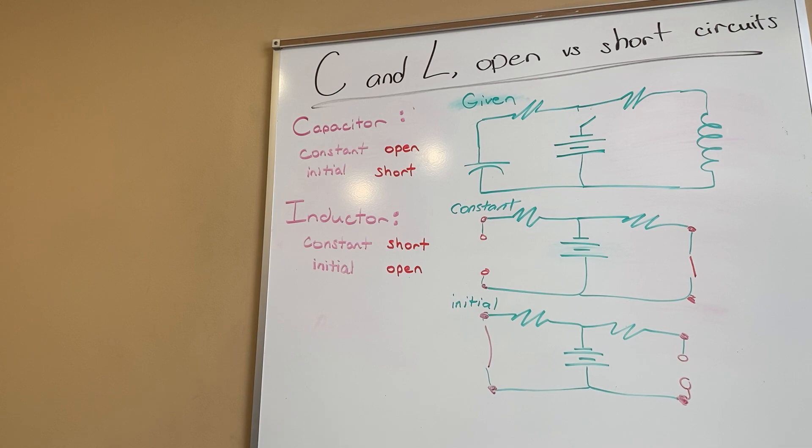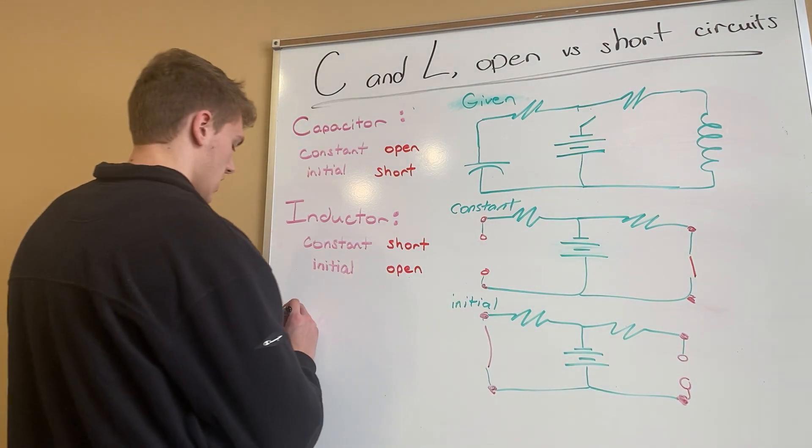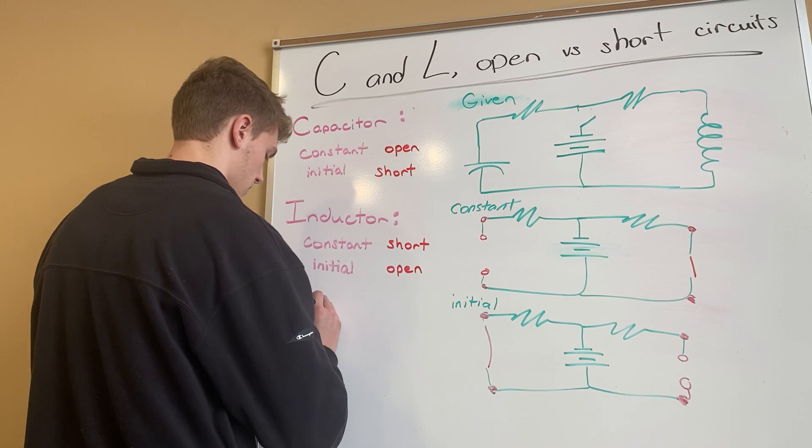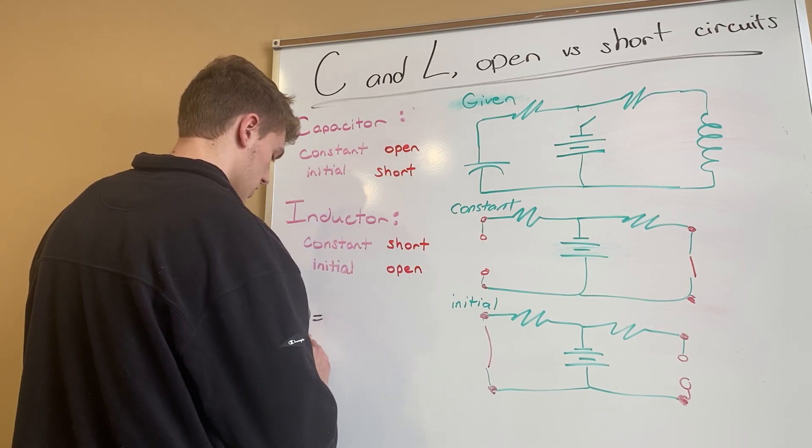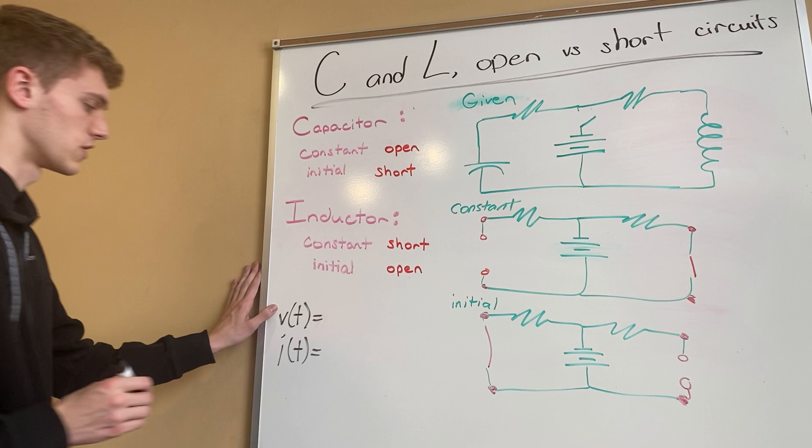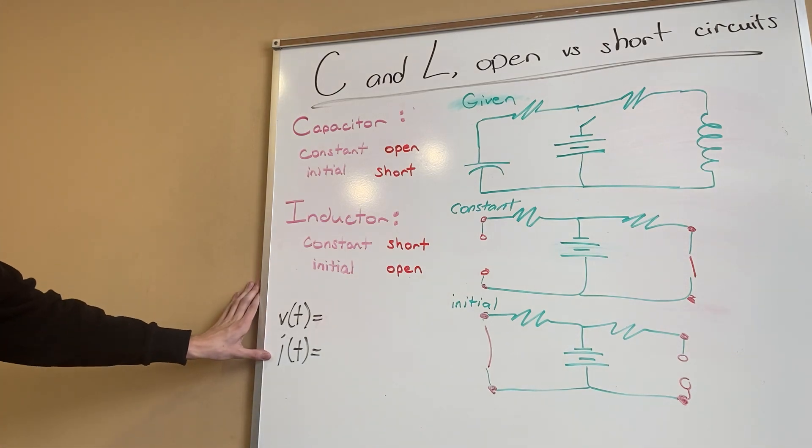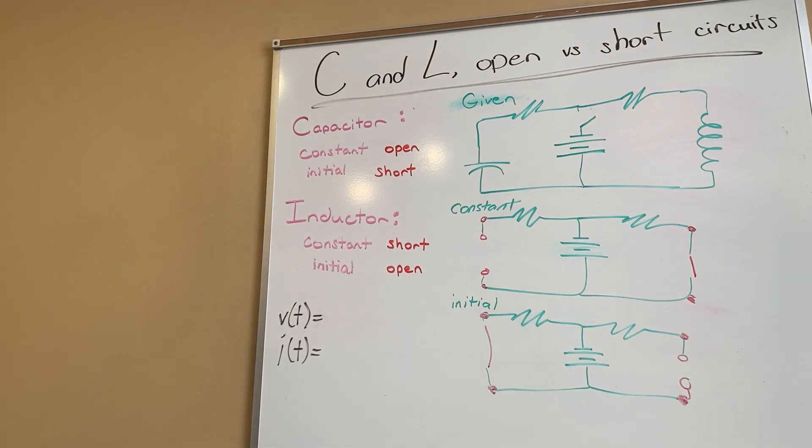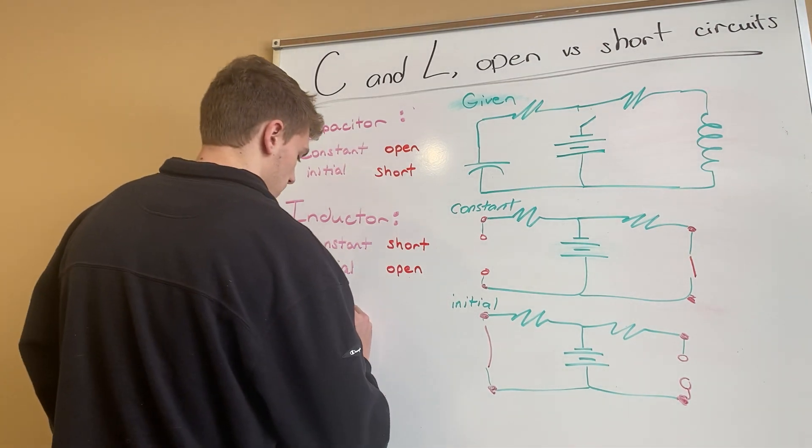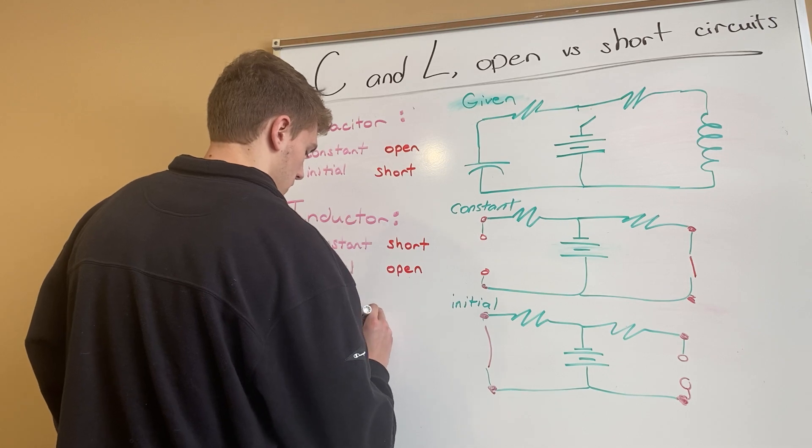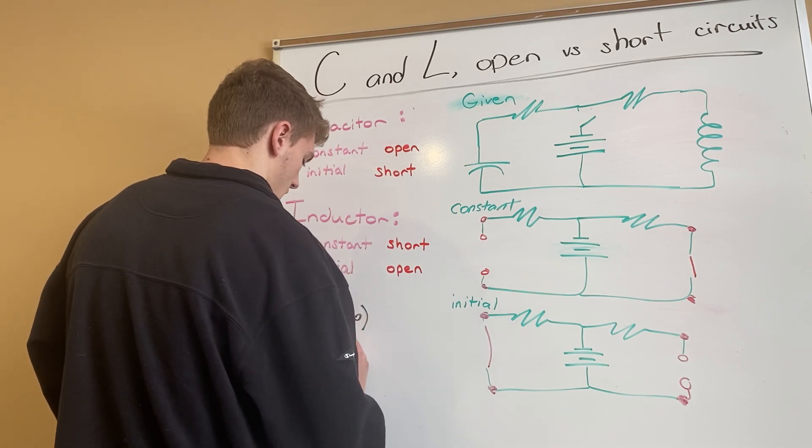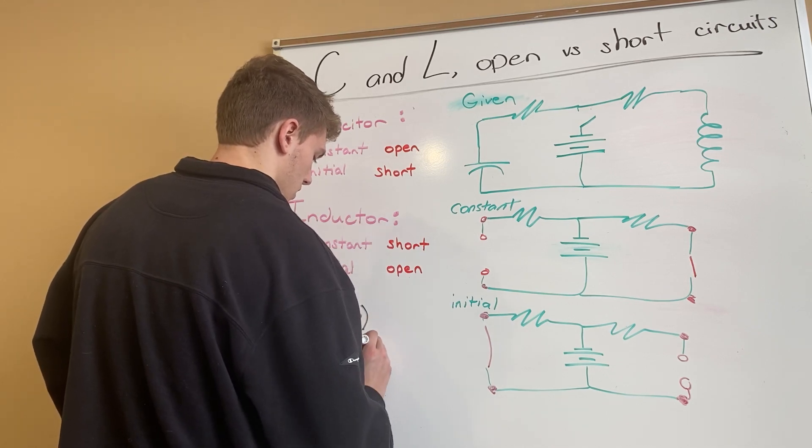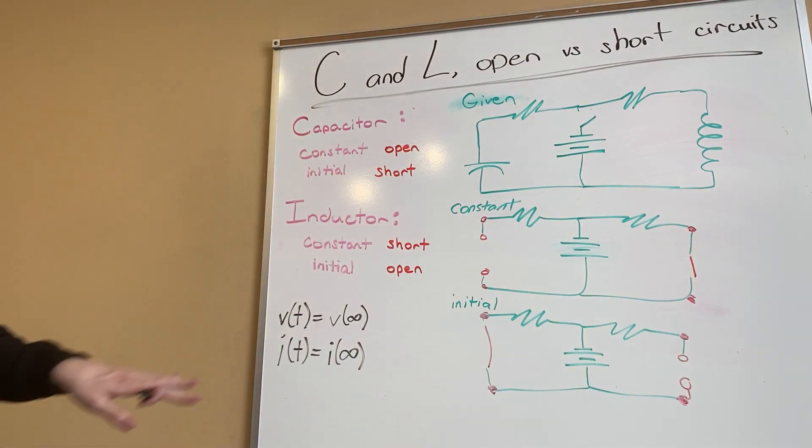The current at a certain time of the node or of the circuit after we've been going through it for a long time. So V of infinity or I of infinity, that's what our starting value is, that would have been our constant after it's been open for a very long time or an infinite amount of time having voltage or current through it.